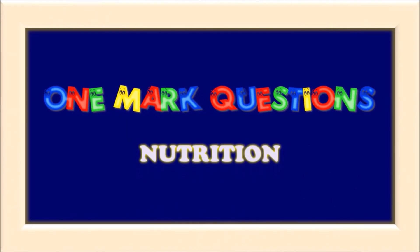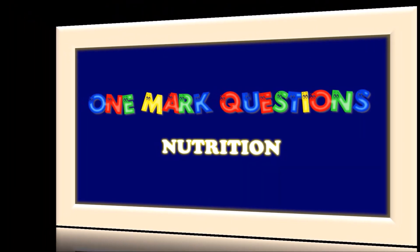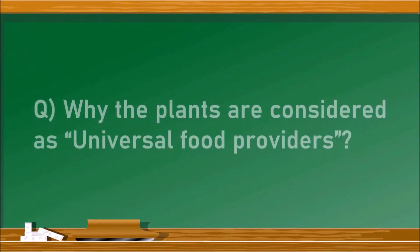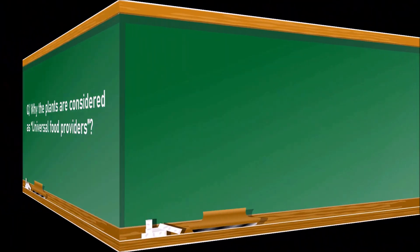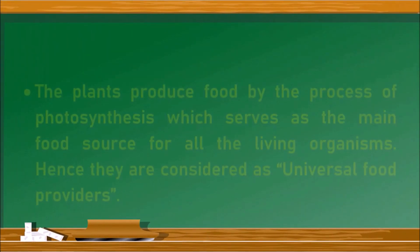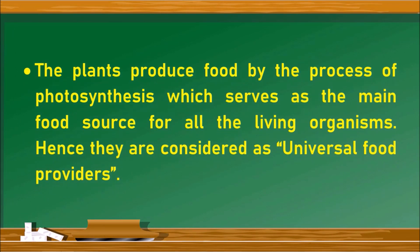The first question is: why are plants considered as universal food providers? The answer is that plants produce food by the process of photosynthesis, which serves as the main food resource for all living organisms on this earth. Hence they are considered as universal food providers.